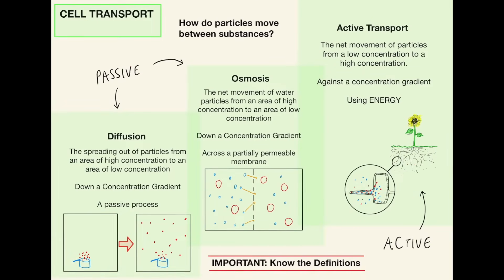Cell transport. There are three different types of cell transport. The first two are passive processes, meaning they happen naturally with no energy required — diffusion and osmosis. The definitions are very similar, so I'd highly recommend pausing the video and writing them down, as exam questions love the definitions of these. The main difference is that osmosis involves water particles moving through a partially permeable membrane, whereas diffusion happens within a container or room and can also involve gases. Active transport is the net movement of particles from a low concentration to a high concentration — against the concentration gradient — and does require energy. For example, root hair cells collect nutrients and water from the soil for the plant to use.